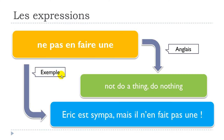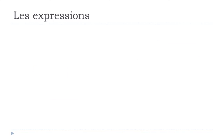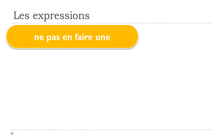Let's see one example: 'Eric est sympa mais il n'en fait pas une' — Eric est sympa mais il n'en fait pas une. And let's see now how you would conjugate this expression at different tenses.